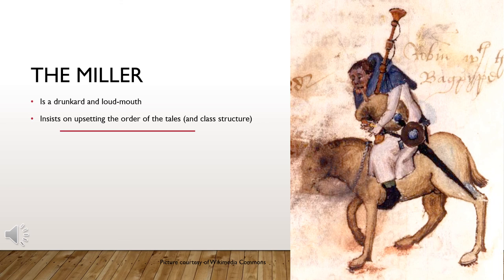The Miller basically just grinds grain into flour. He's a big mouth, literally and figuratively, and has a wart on his nose. He's not very concerned with where his place in the hierarchy is — so much so that he drunkenly demands to tell the second tale, which is out of order by class. The tale itself is blasphemous and makes fun of everyone above him in station, including women.